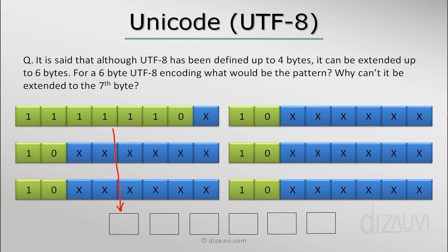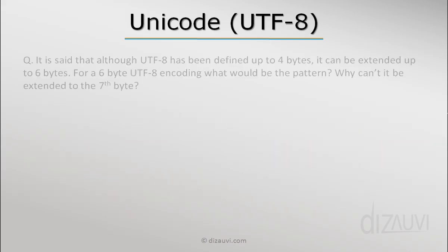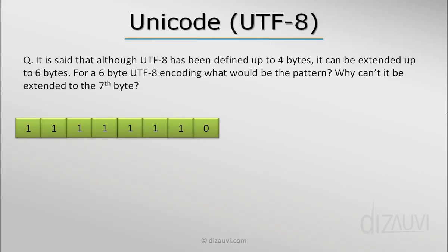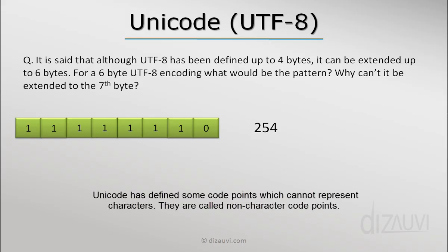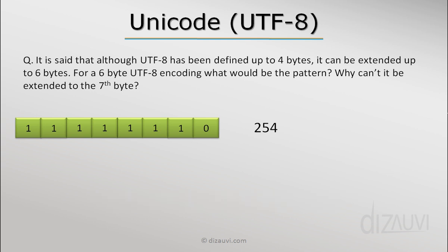What about seven bytes? The leading byte would have seven ones followed by a zero, which equals 254 (or FE in hex). This is part of the non-character sequence defined by Unicode — similar to the byte order mark in UTF-16 — so this bit sequence cannot be used in a character mapping unless Unicode allows it. Now let's look at how to encode and decode code points in UTF-8.